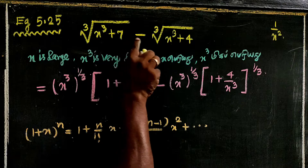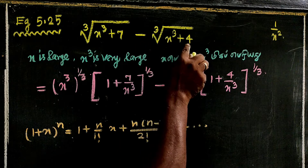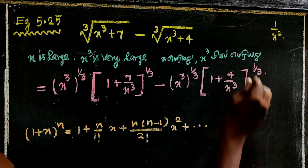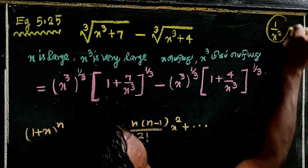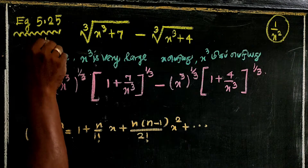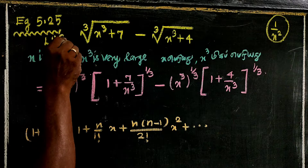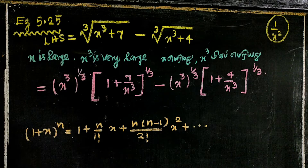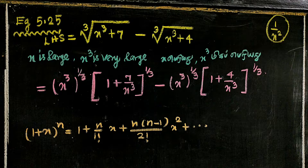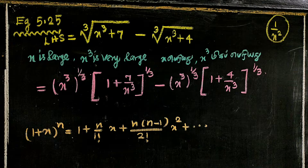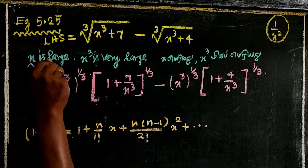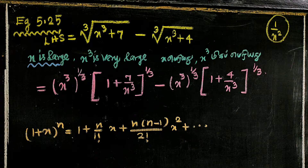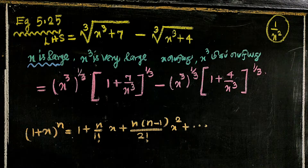So 1 by (x³ + 4) equals cube root of (x³ + 7) minus cube root of (x³ + 4). Now we can give a little hint: x is large, so x³ is very large.